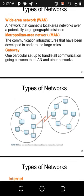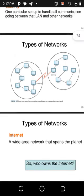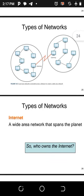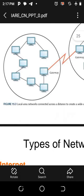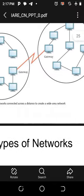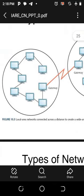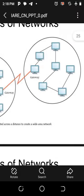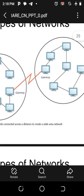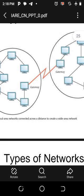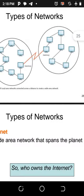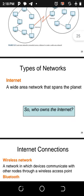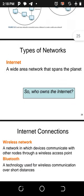Looking at this diagram of a gateway: we have a local area network connected across a distance to create a wide area network. About six computers are connected through a gateway, sending information through it to connect to another six computers. These computers will be sharing similar information across the gateway.